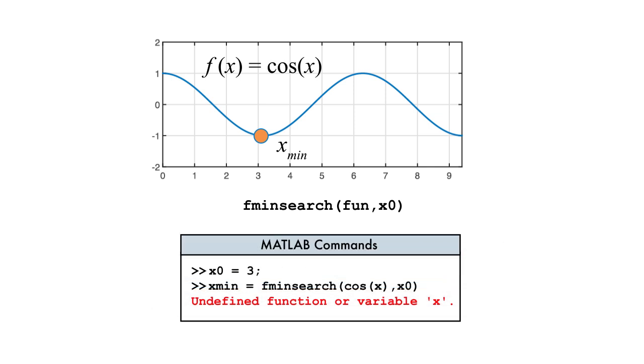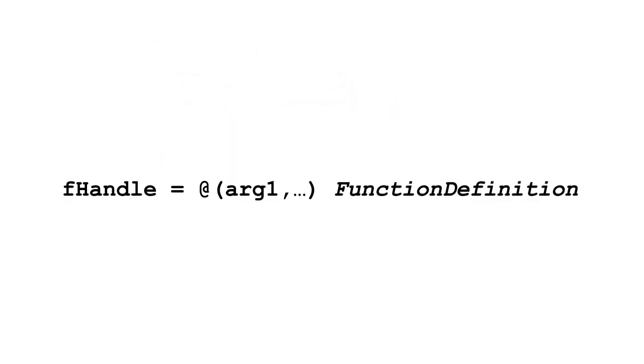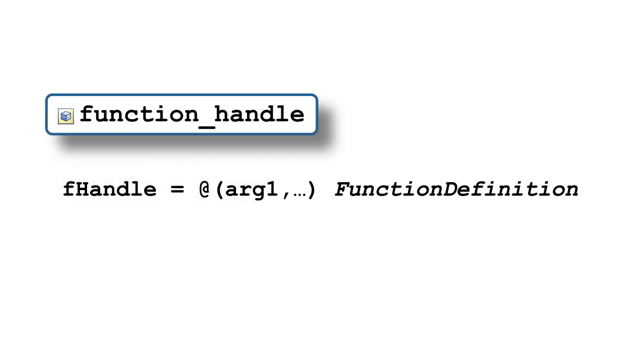So how do we pass the cosine function as an input to fminSearch? We use what's called a function handle. A function handle is a MATLAB variable that contains a reference to a function.